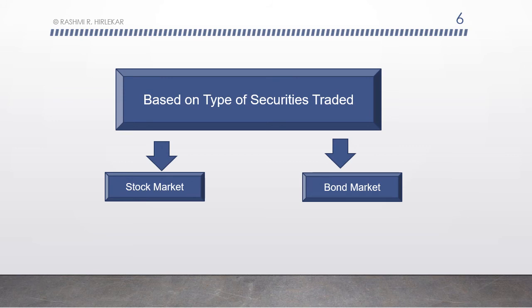A stock market or equity market is a public entity for trading of company's stock — that is, shares and derivatives — at agreed prices. It is a place where shares of public listed companies are traded. The primary market is where companies float shares to the general public in an Initial Public Offering (IPO) to raise capital.